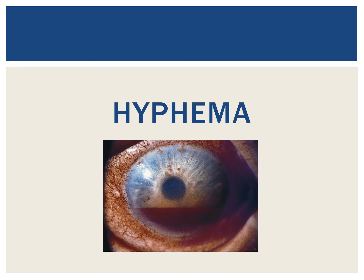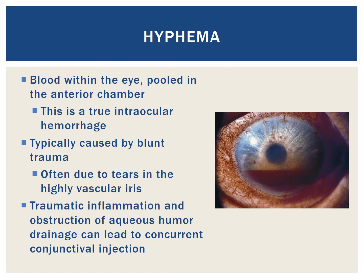Lastly, we will review hyphemas. A hyphema is the presence of pooled blood within the anterior chamber of the eye, making it a true intraocular hemorrhage. Typically, hyphemas are due to blunt trauma to the eye, which leads to tears in the highly vascular iris. The level of hemorrhage may vary from just a small collection of blood in the bottom of the anterior chamber that may be hard to appreciate without a slit lamp, to a more significant bleed clearly visible with the naked eye. Hyphemas may even fill the entire anterior chamber and block the view to the iris. The eye in the image also has significant conjunctival injection due to elevated intraocular pressure and associated inflammation.